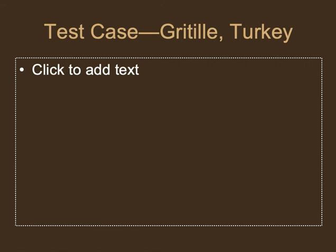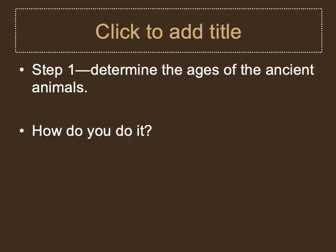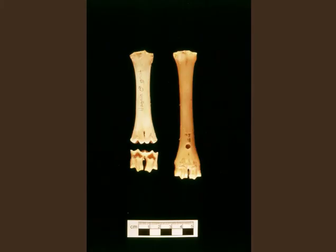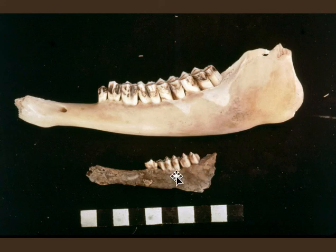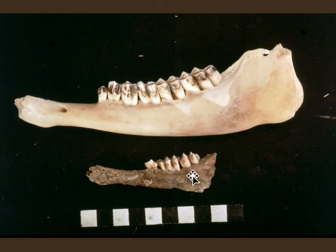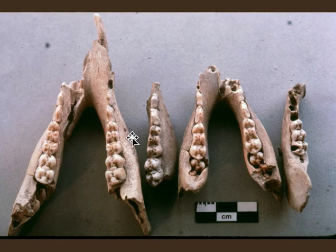Researchers worked at a site called Gritola in Turkey — a very early Neolithic site — to determine what animals were mainly used for at the beginnings of domestication. To figure out the age of animals, you can use bone fusion to distinguish juveniles from adults. You can also use teeth — some of you are probably getting your wisdom teeth in. Here you can see a young sheep or goat with high sharp cusps on the molars to grind grass; all molars have erupted in the adult but not in the juvenile.